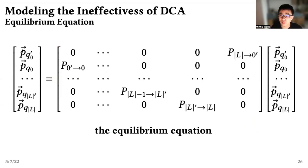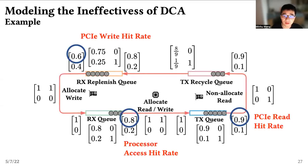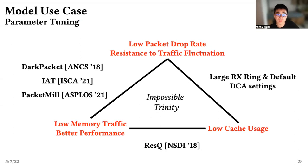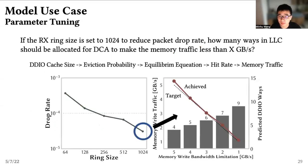Once our metrics are available, we solve an equilibrium equation to get a stable probability distribution of our Markov model. The stable probability at a certain logical state is just the expected hit rate that we are interested in. We can now model the performance of DDIO precisely, and it can help us in networking parameter tuning. For example, the tuning of RX ring size usually meets an impossible trinity: if we want a low packet drop rate and resistance to traffic fluctuation, we need a large enough RX ring, but it generates large memory traffic unless enough cache is allocated. Our model can help the probability of tuning this problem, because memory traffic can be estimated from hit rate. As shown in the figure, if we set the ring size to 1024 to minimize packet drop rate, our model can predict the required ways for DDIO to meet certain memory traffic constraints.